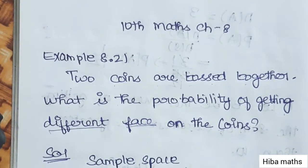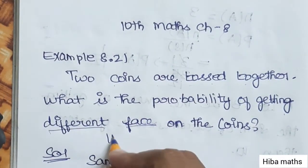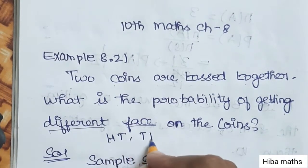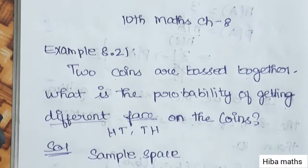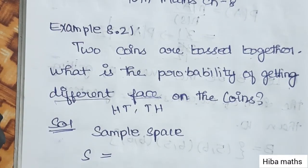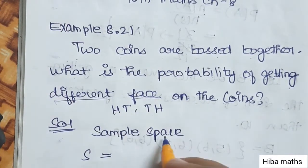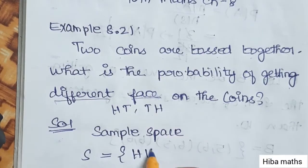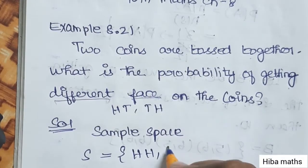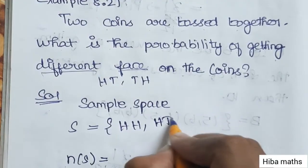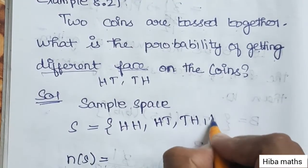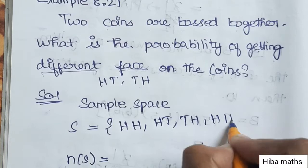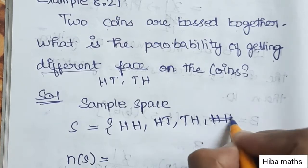Different faces means one head and one tail. When 2 coins are tossed, the sample space is: HH, HT, TH, and TT.